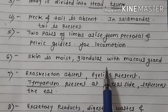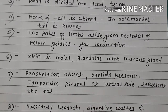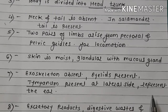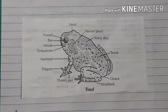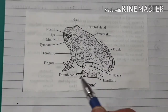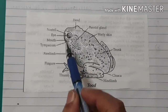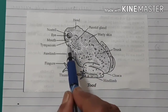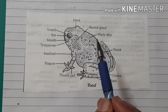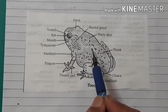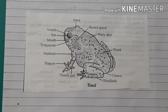Skin is moist, glandular, with mucous glands. Exoskeleton is absent. Eyelids are present. Tympanum is present at the lateral side, representing the ear for hearing. Skin is moist and glandular, consisting mucous glands.